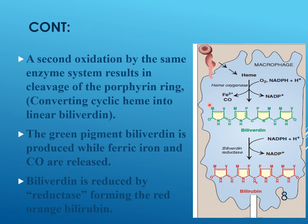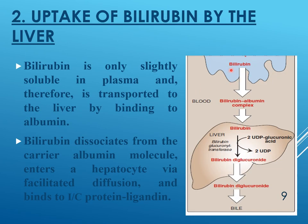Biliverdin, a green pigment, is then reduced into bilirubin, a red-orange pigment, by the enzyme biliverdin reductase using NADPH as coenzyme. The final product in the macrophages from the breakdown of RBCs is bilirubin.